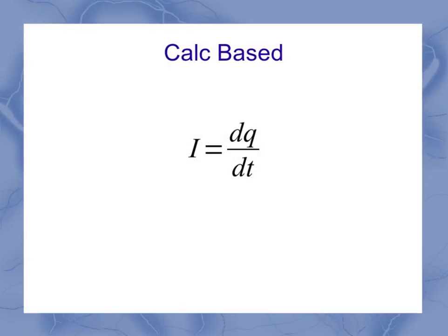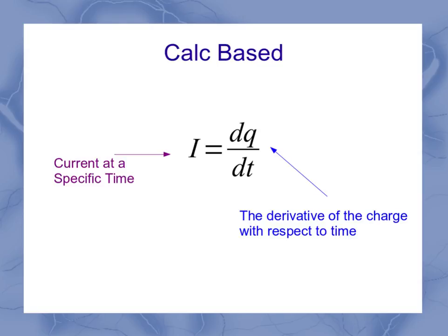Now if I'm doing calculus-based problems, then I may also see this equation, where my derivative of the charge with respect to time gives me my current at a specific time. So rather than looking at the average over a large time span, I can look at it on a moment per moment basis.